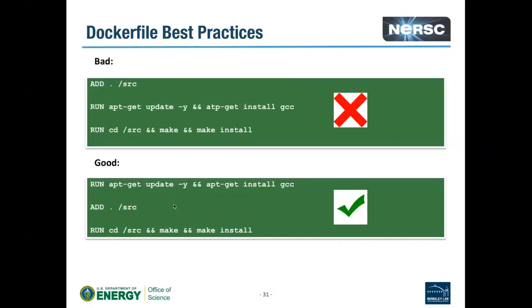Ordering in the Dockerfile matters for build caching. Docker caches each layer and skips steps if neither the Dockerfile nor the added files have changed — similar to make. If files being added change frequently and are placed early in the Dockerfile, they'll trigger a cache invalidation that forces all subsequent steps (like apt-get installs) to re-run, which can be slow. Best practice is to put stable, time-consuming steps like package installations first, and add frequently-changing code or data files later.